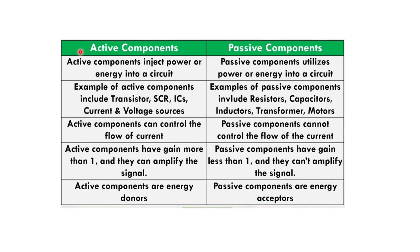Now the difference between active and passive components. Active components inject power or energy into a circuit, while passive components utilize power or energy. Examples of active components include transistors, SCRs, ICs, and current/voltage sources. Passive components include resistors, capacitors, inductors, transformers, and motors. Active components can control the flow of current and have gain greater than one, so they can amplify signals, whereas passive components cannot control current flow and have gain less than one.